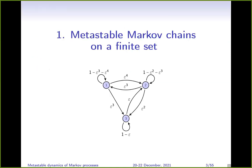Let me briefly recall a couple of things I said yesterday. I was interested in these Markov chains on a finite set, and they have the particularity of being very close to the identity. So all transition probabilities are very small — all states of the Markov chain are actually metastable states. But the different transition probabilities, they're all small but they can be very different — these are different powers of epsilon. The aim was to say something not only on this example but on a very general type of chain with many more states.